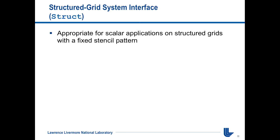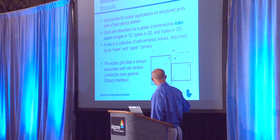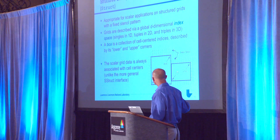The first interface is called struct, and it's appropriate for problems on structured or logically structured grids — scalar problems. It's described in terms of grids, and a grid in this interface is basically a collection of boxes. Boxes are like the two boxes shown here — a collection of grid points — and together they define a grid. You give the lower and upper corner of a box, define any number of boxes, and their union is your grid. For this interface, the data is always assumed to be associated with the cell center.